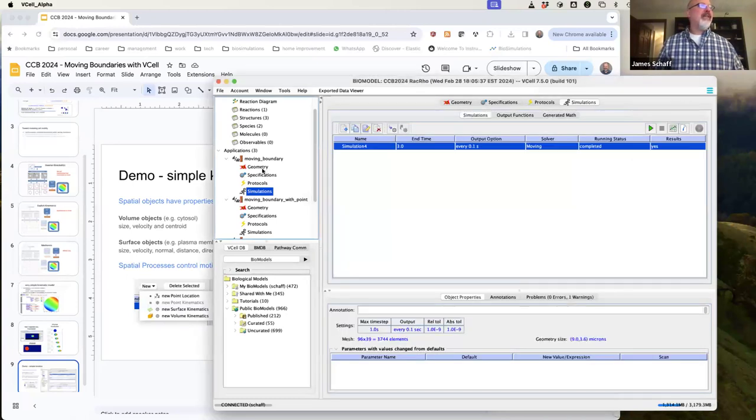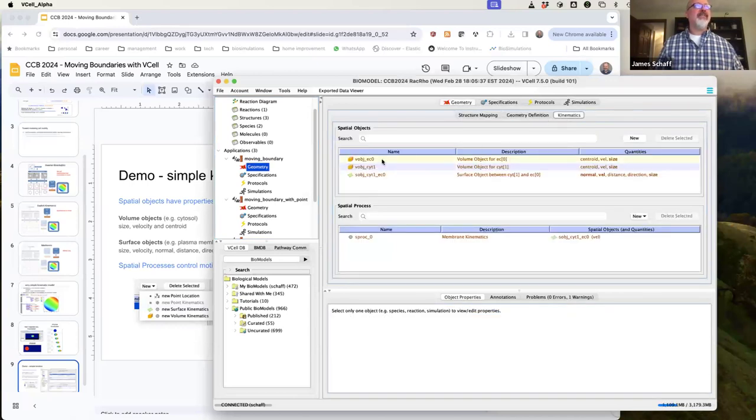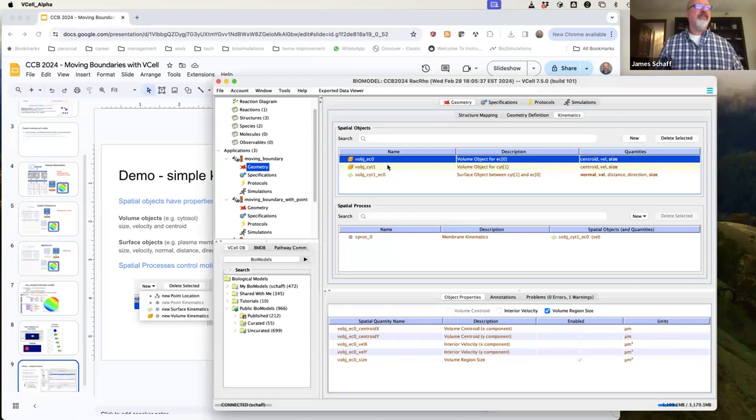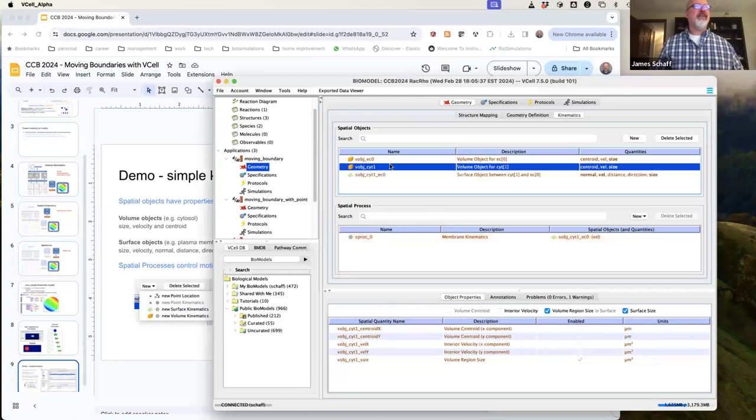But if we look at the descriptions of the kinematics, right? We have the surface quantities, there's membrane kinematics, and then you have the velocities associated with the volumes.